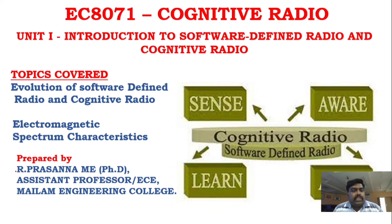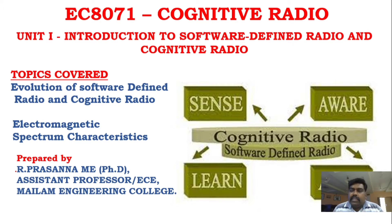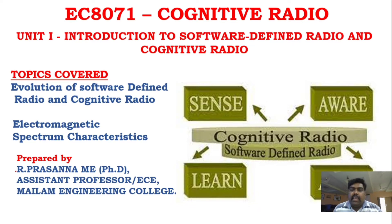Unit one is the easiest unit, so we will start with it now. In the previous class I have already introduced what is cognitive radio and what is SDR — software defined radio.